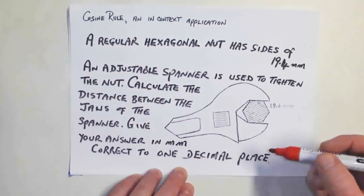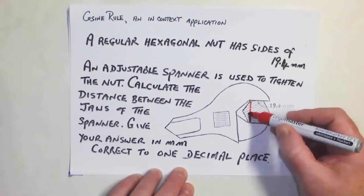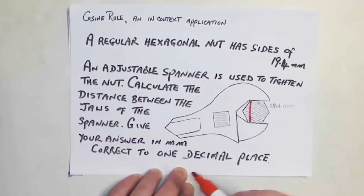Calculate the distance between the jaws, which is this distance here, is what I'm looking for between the jaws of the spanner. Give your answer in millimeters, correct to one decimal place.